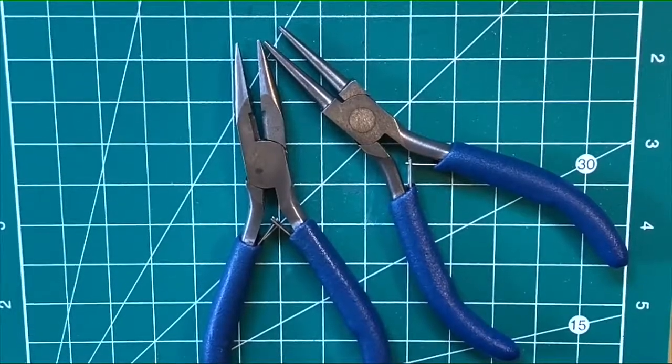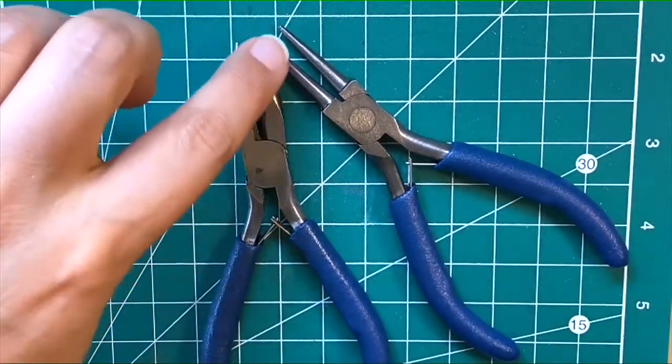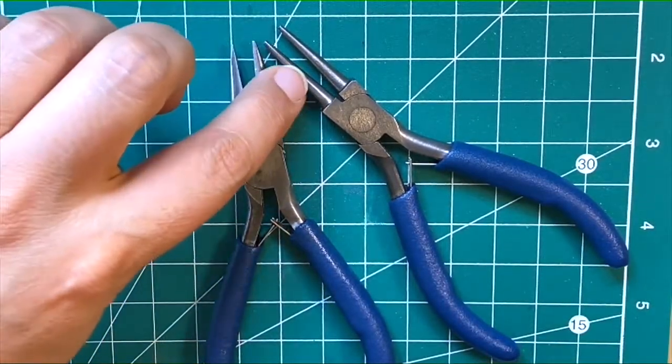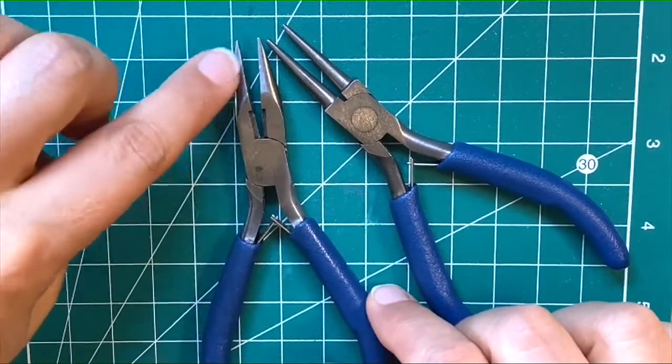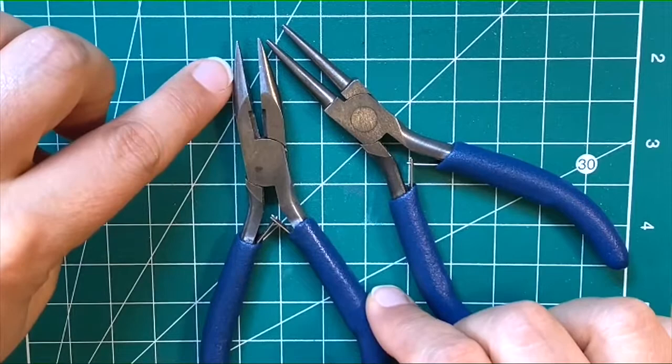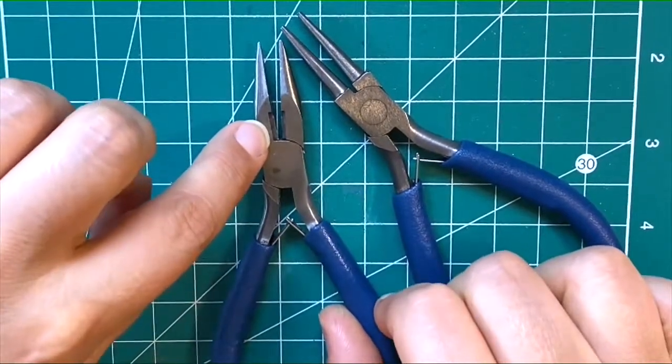Quick introduction to the tools you're going to need for this tutorial. These are round nose pliers, called that because they have a round nose. These are chain, snipe, or flat pliers - I use these all day long. Mine have a cutting blade in the middle which is great.